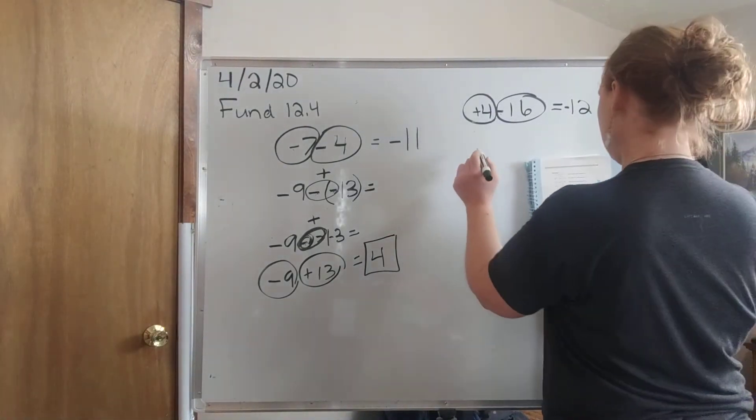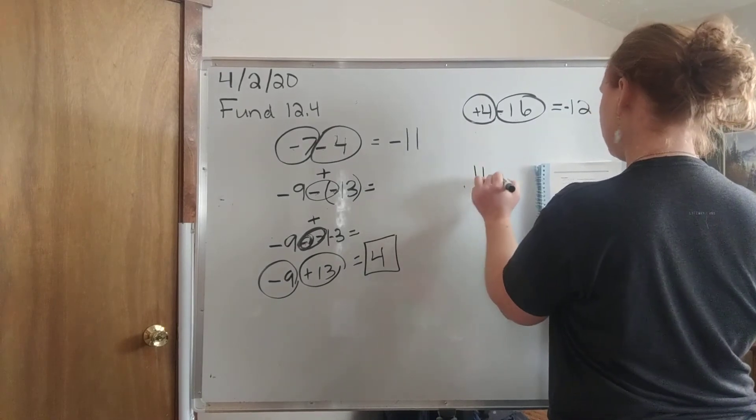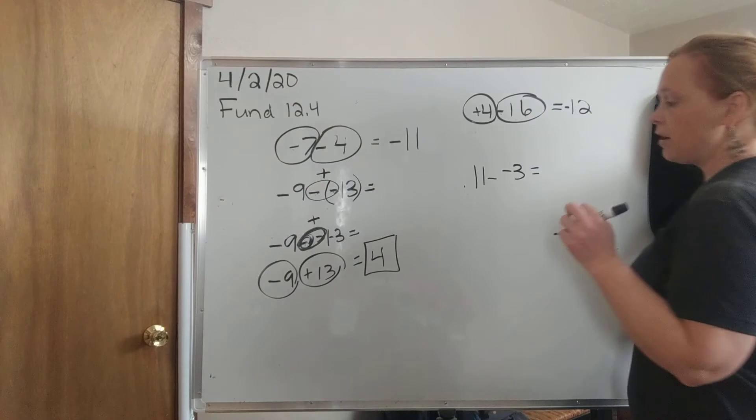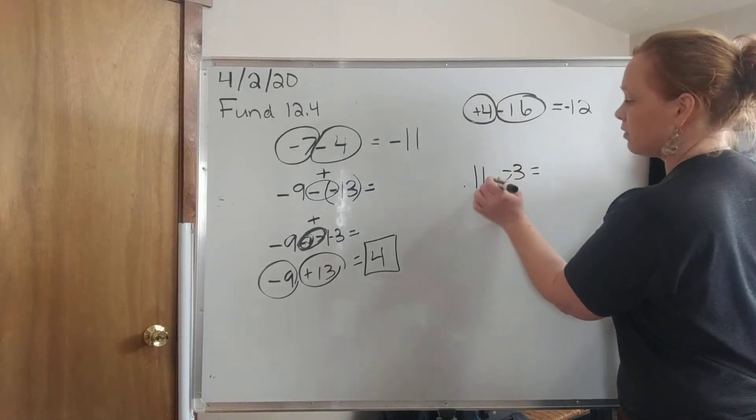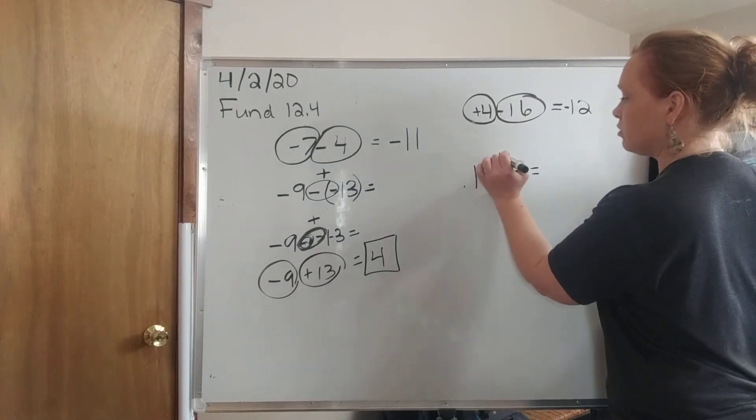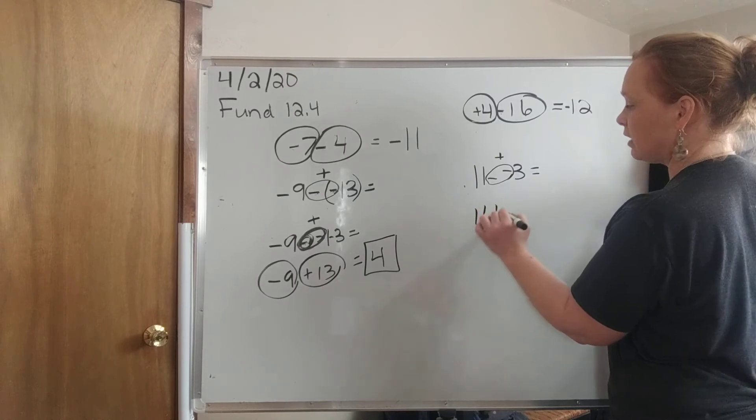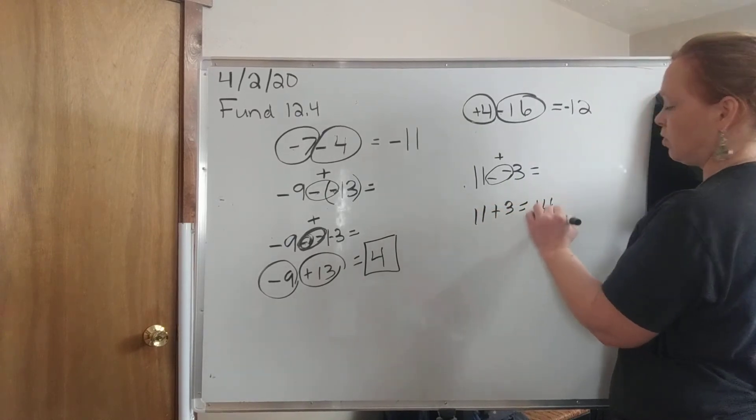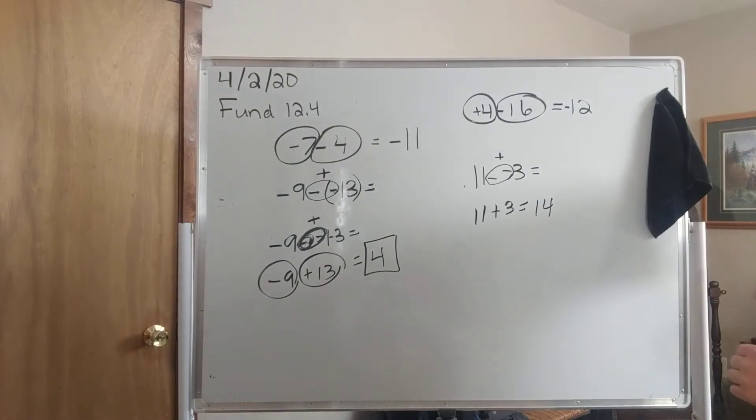And then my last example is 11 minus negative 3. So I hope you already picked up that these two negatives are right next to each other. So I can change it to a positive. In this case, I have 11 plus 3, which equals 14.